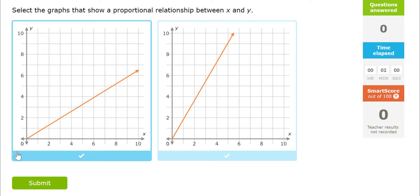With graphs, it's pretty easy. A proportional relationship, first of all, it's got to be a linear relationship. It's got to be a straight line. Both of these have straight lines and they both start at the origin. So I'm going to check both of them. They're both proportional.